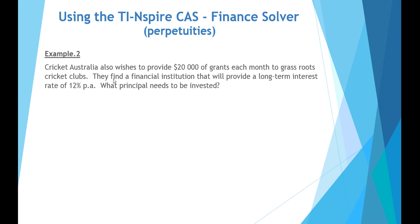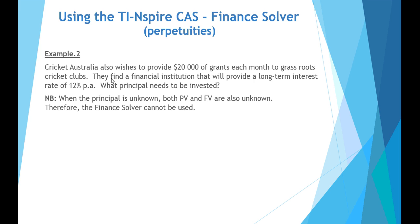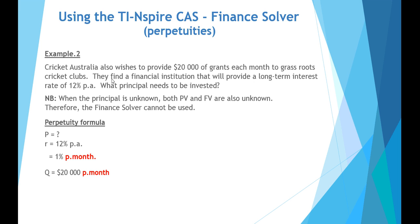In the final example, Cricket Australia wants to provide $20,000 of grants each month to grassroots cricket clubs, with a long-term interest rate of 12% per annum. We need to find the required principal. Because both PV and FV would be unknown, we cannot use the finance solver — we go back to the perpetuity formula. The rate is 12% per annum, which converts to 1% per month (12% ÷ 12), and the monthly payment is $20,000. Substituting into the formula gives a required investment of $2,000,000.